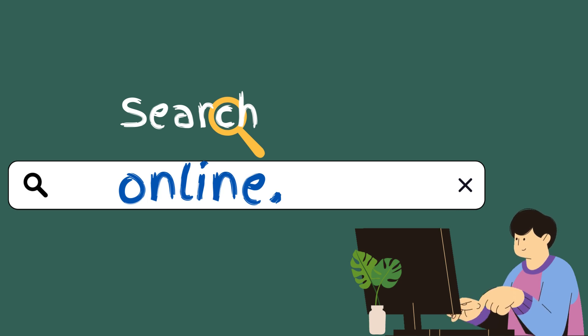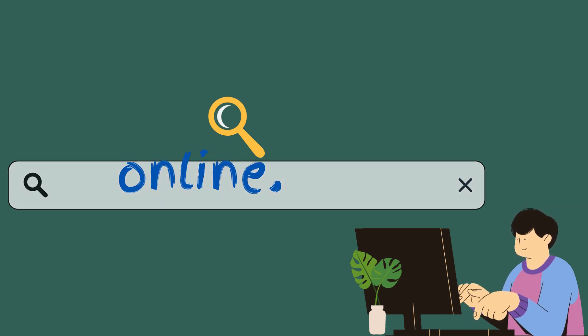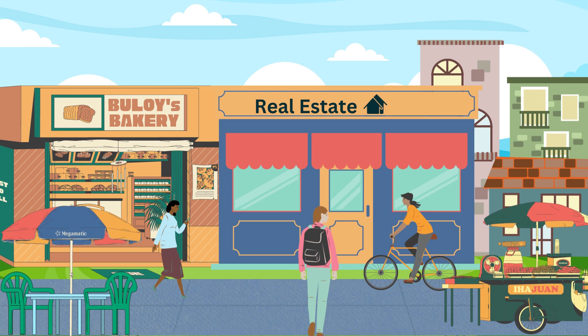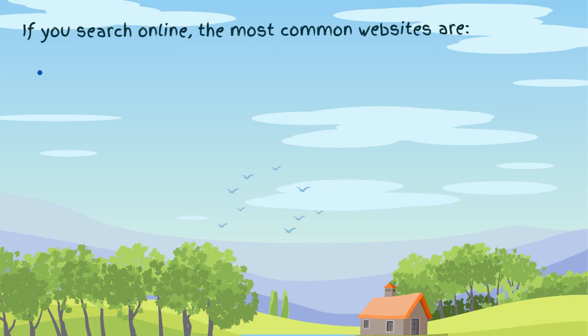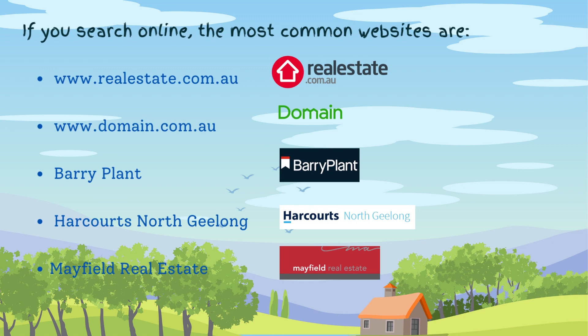The most common and convenient way to find a property to rent is to search online. It is also possible to visit a specific real estate agent's office to discover any properties they currently have for lease. Many real estate agencies also advertise properties for rent by displaying a sign in front of available properties. If you search online, the most common websites are www.realestate.com.au, www.domain.com.au, Barry Plant, Harcourt's North Geelong, and Mayfield Real Estate.